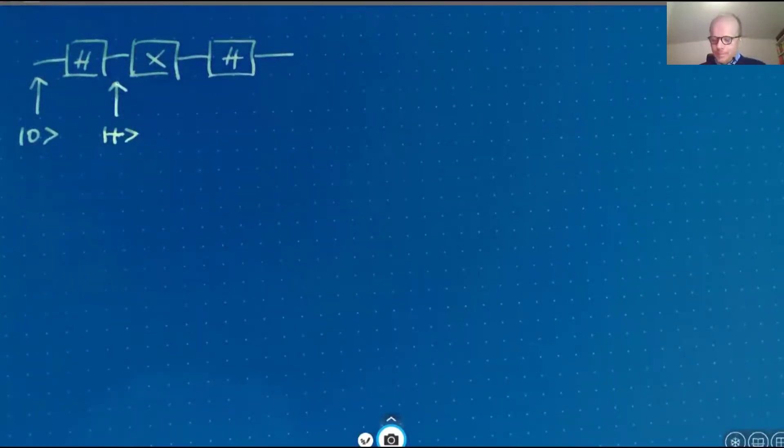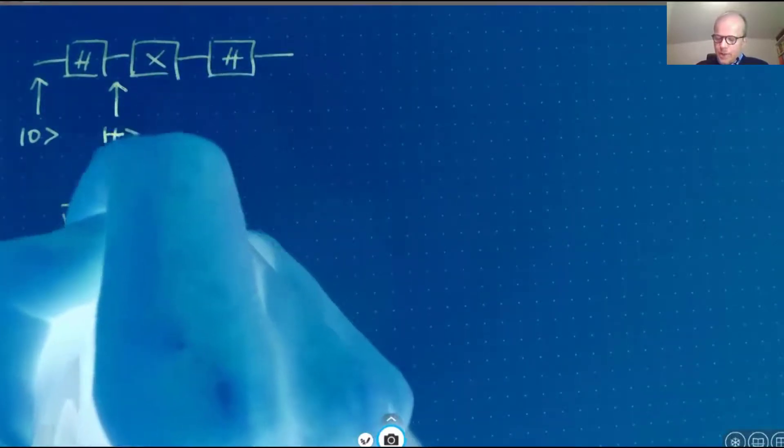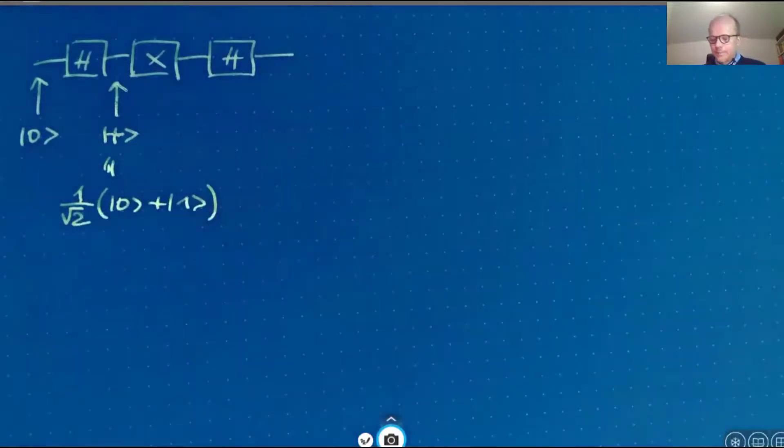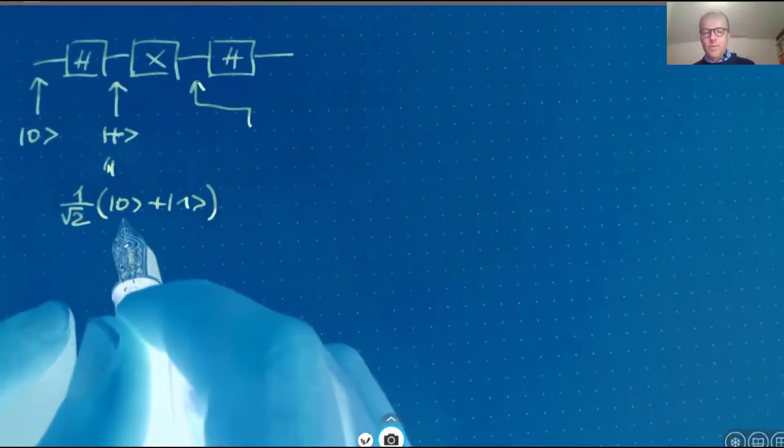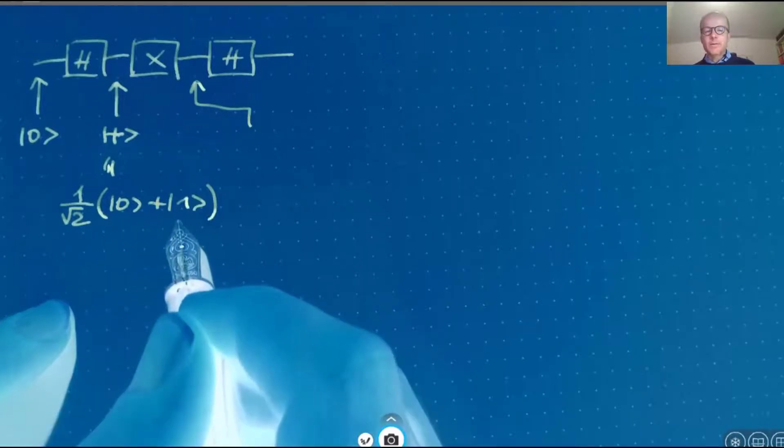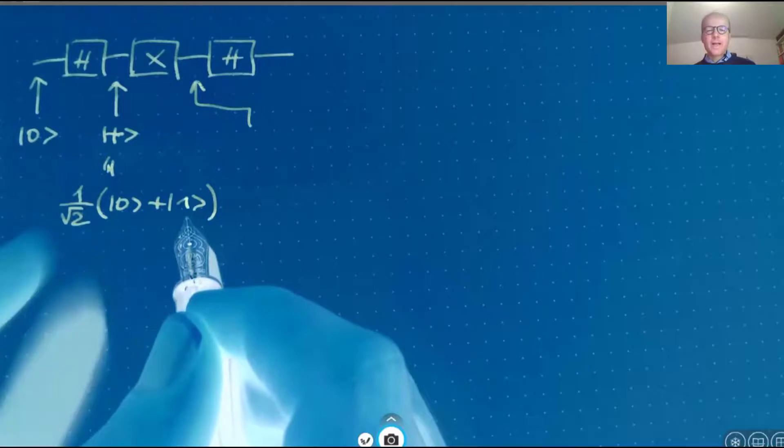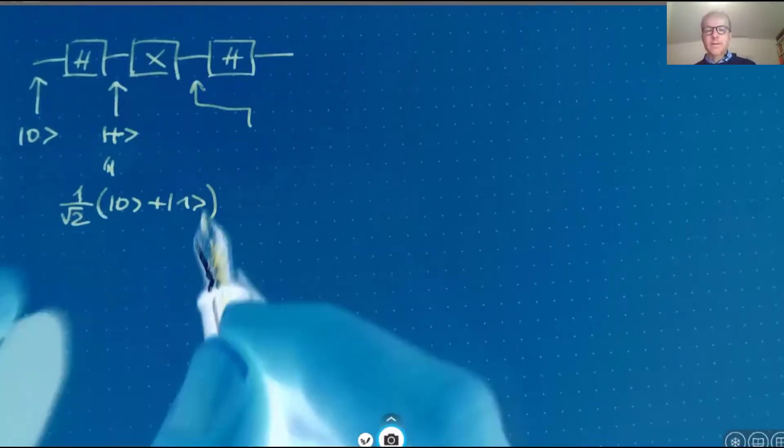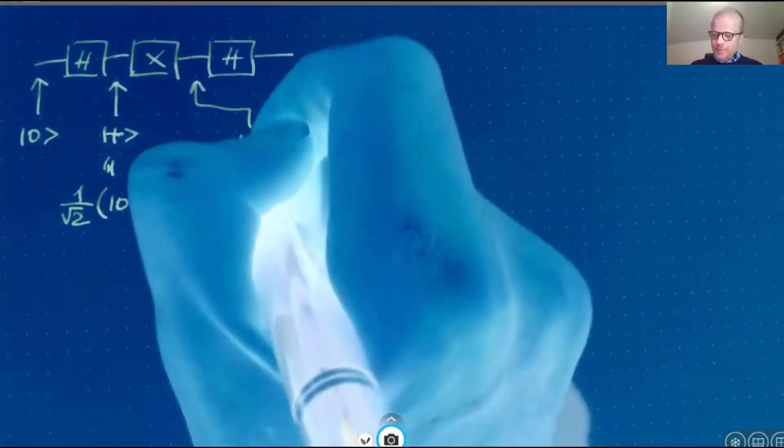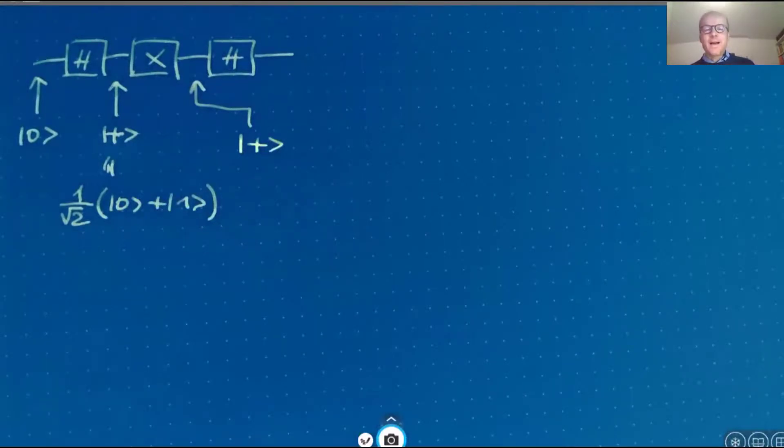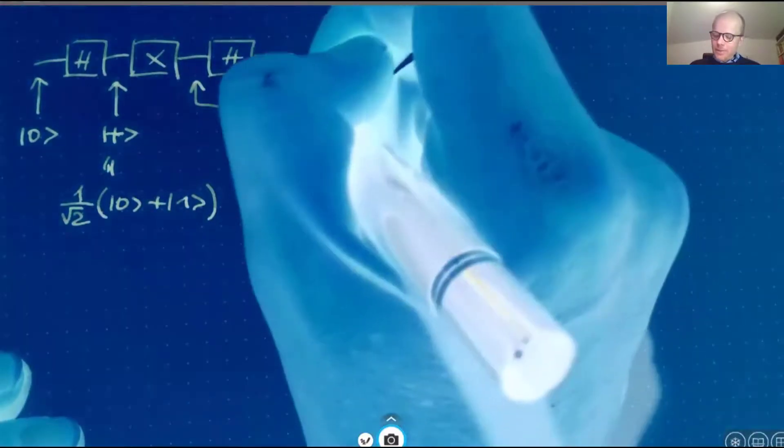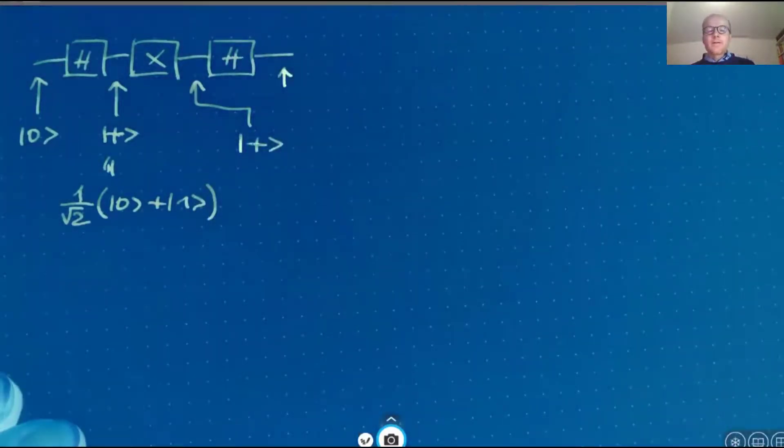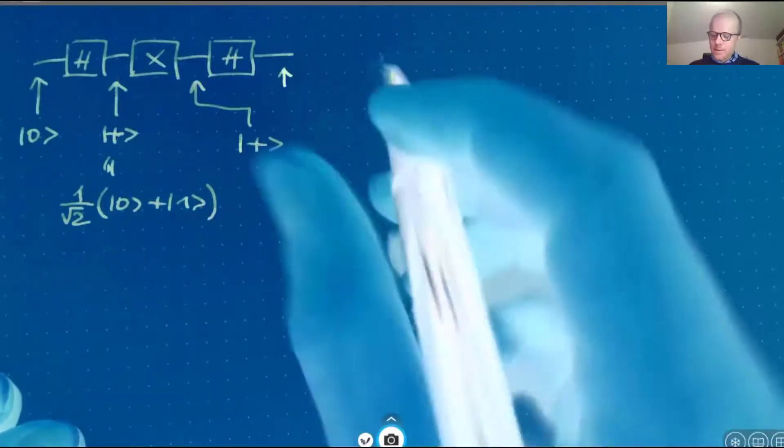The plus state, remember, is this linear combination of zero and one. Then the Pauli X flips the basis states. So zero becomes one and one becomes zero. But in the bracket we still have the same sum, and just the order is exchanged. But it doesn't do anything. So actually the plus state is an eigenstate of Pauli X. It remains unchanged.